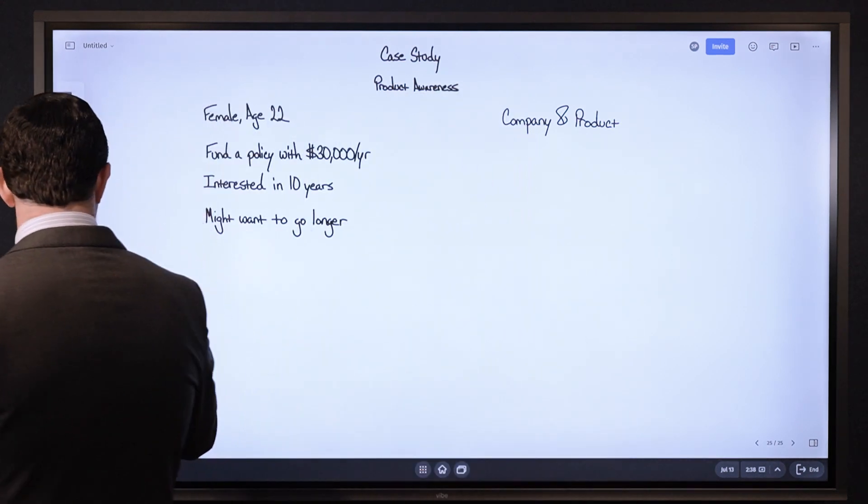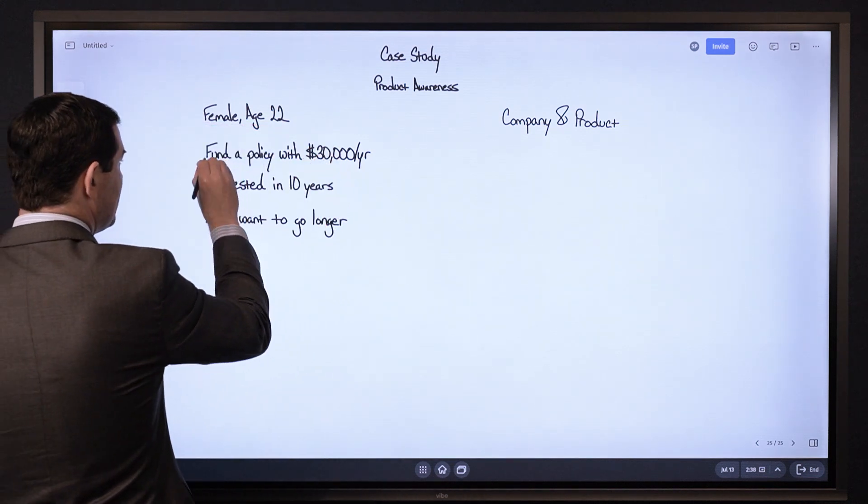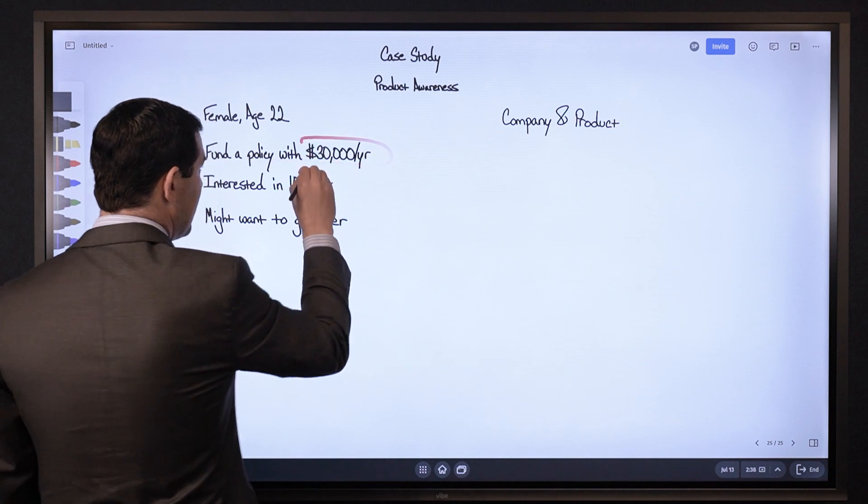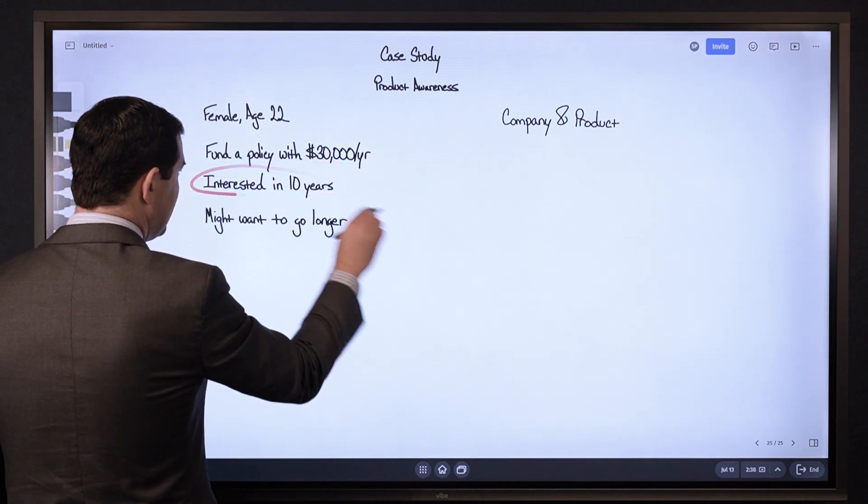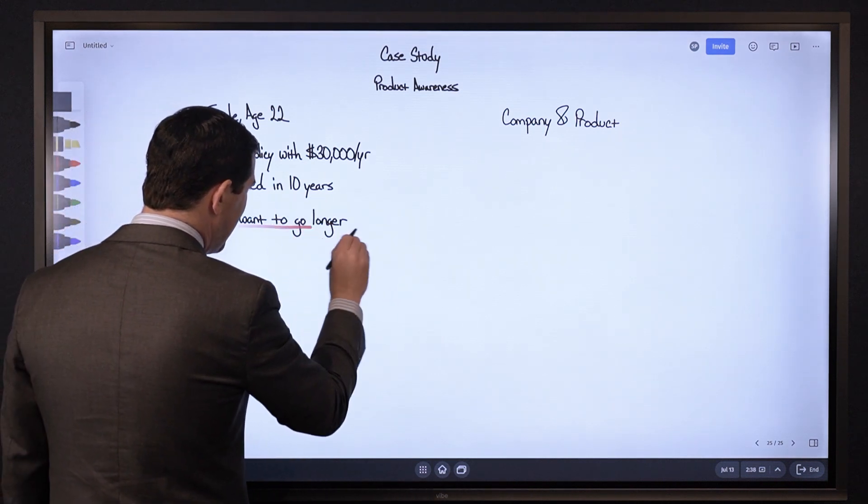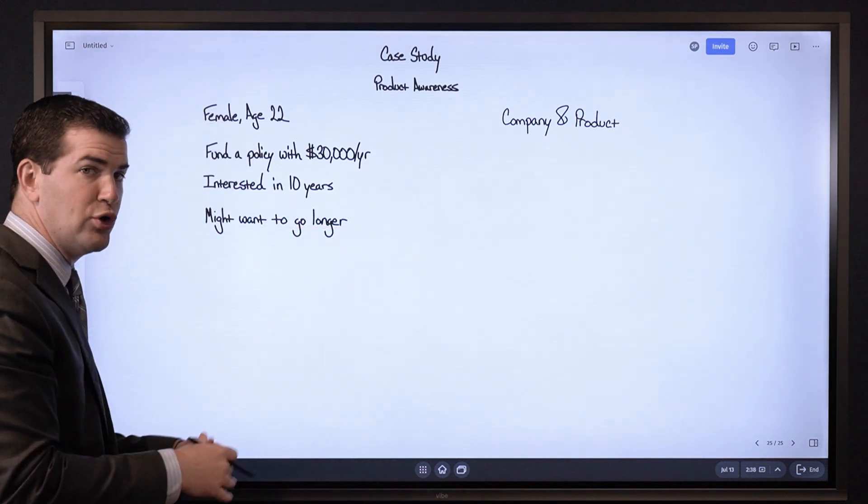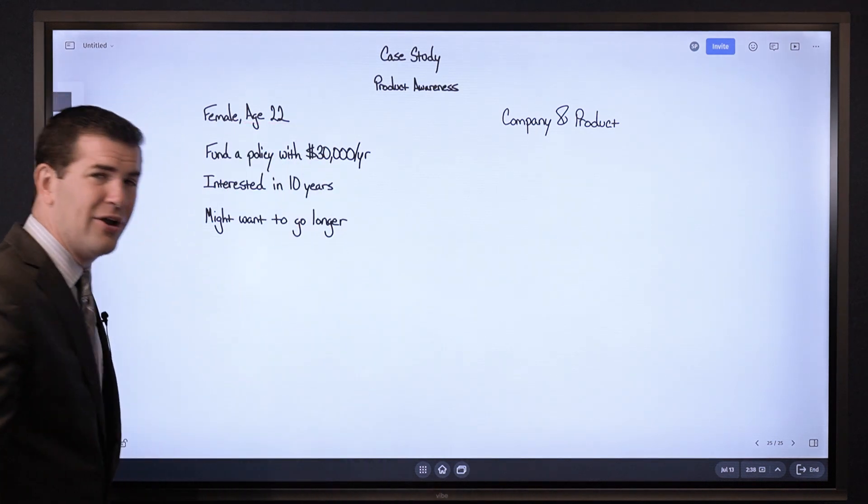To provide some case specs, we've got a female age 22 interested in funding a policy with $30,000 per year. Initially she's interested in a 10-year funding period, however she might want to go longer. She might want to continue to fund the policy, and at her age it could make sense too.